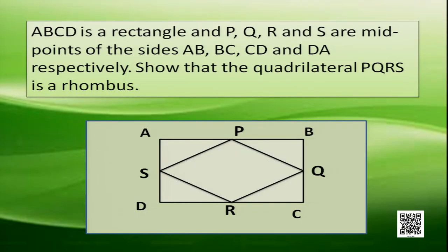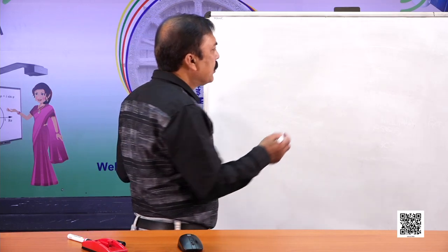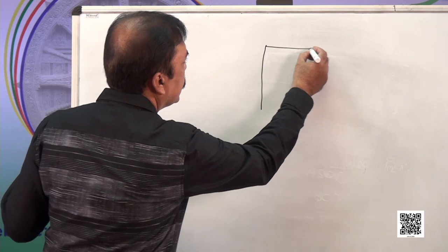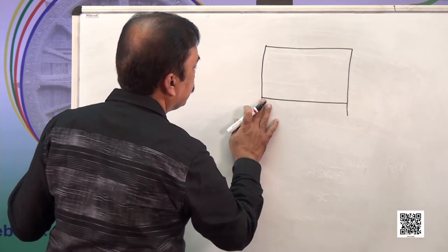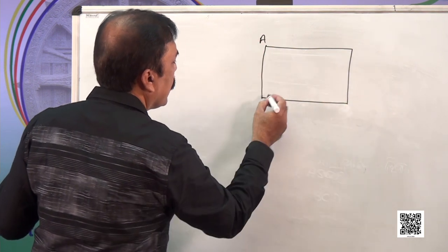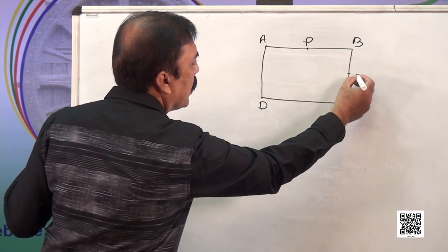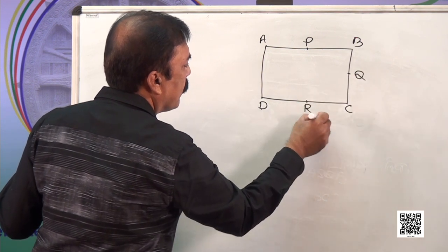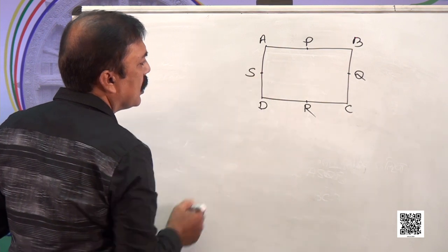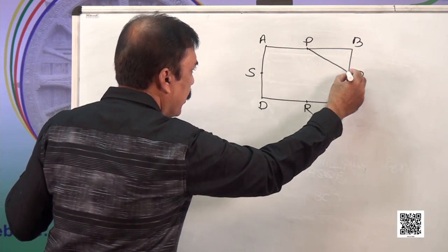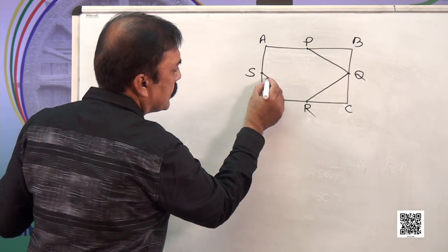Another question: ABCD is a rectangle and P, Q, R and S are midpoints of sides AB, BC, CD and DA respectively. Show that quadrilateral PQRS is a rhombus. Given ABCD is a rectangle, P is midpoint of AB, Q is midpoint of BC, R is midpoint of CD and S is midpoint of AD. We have to prove PQRS is a rhombus, meaning all sides are equal.